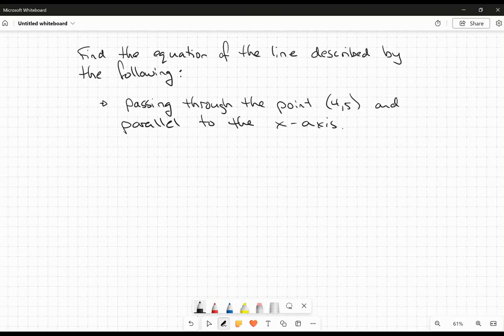Okay, everybody. So in this video, we're going to do a little bit of coordinate geometry. We're going to find the equation of the line described by the following. We want it to be passing through the point (4,5) and parallel to the x-axis.